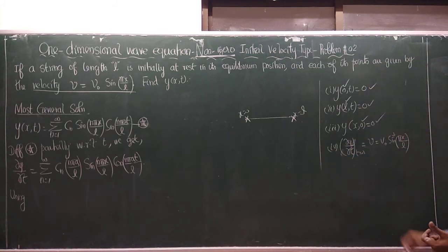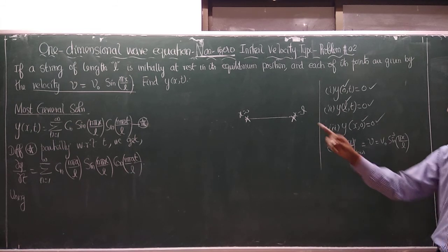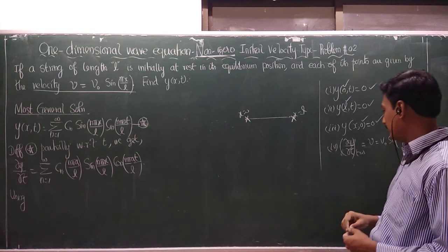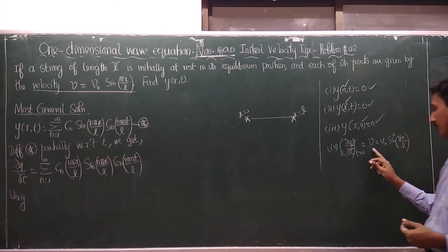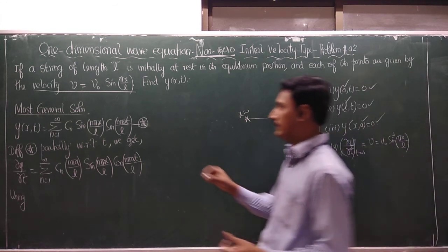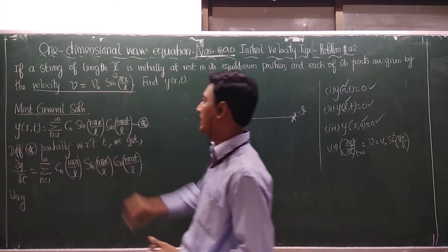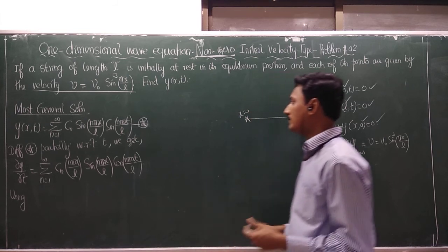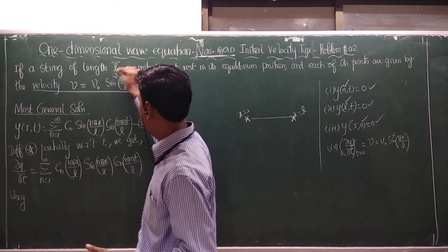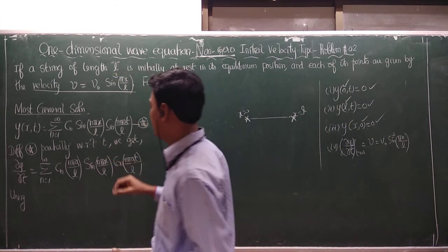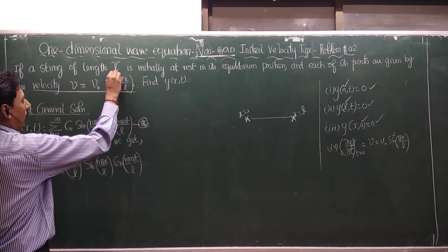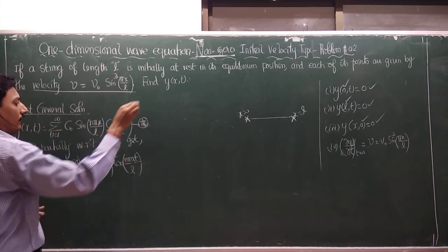The fourth boundary condition gives the initial velocity: ∂y/∂t is equal to V₀ sin³(πx/L) at t equal to zero. Now, with this non-zero initial velocity problem set up, we identify the correct solution form.